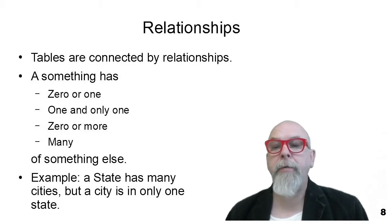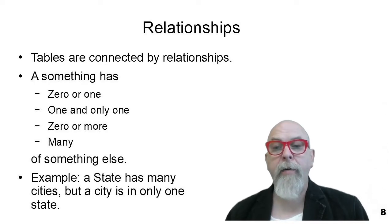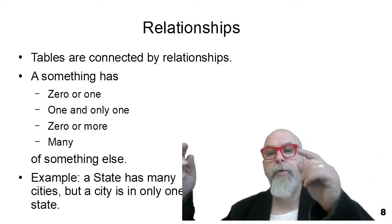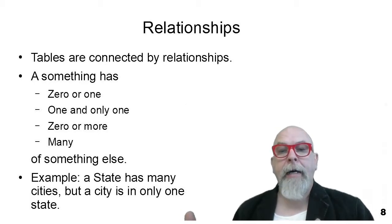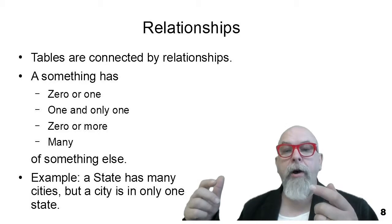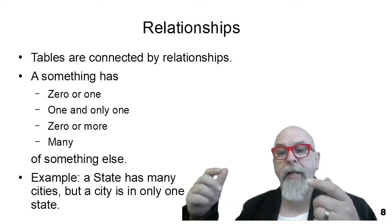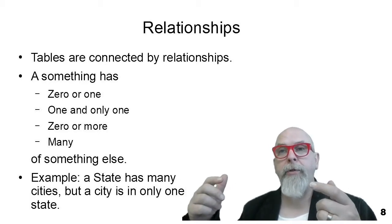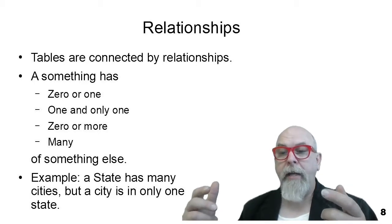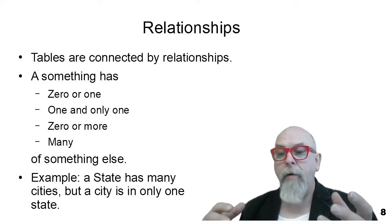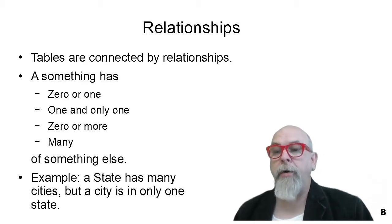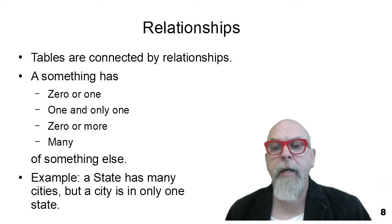Defining entities and their attributes is a pretty straightforward kind of task. The more difficult thing that we do in an entity relationship diagram are relationships. Relationships are how we connect tables together. When we have two tables that have a relationship between them, we say that this relationship has a cardinality. Is it a one-to-one relationship between two tables, a one-to-many relationship, or potentially a many-to-many relationship? That's why we model instead of jumping straight into creating a database without fully understanding what our data looks like.